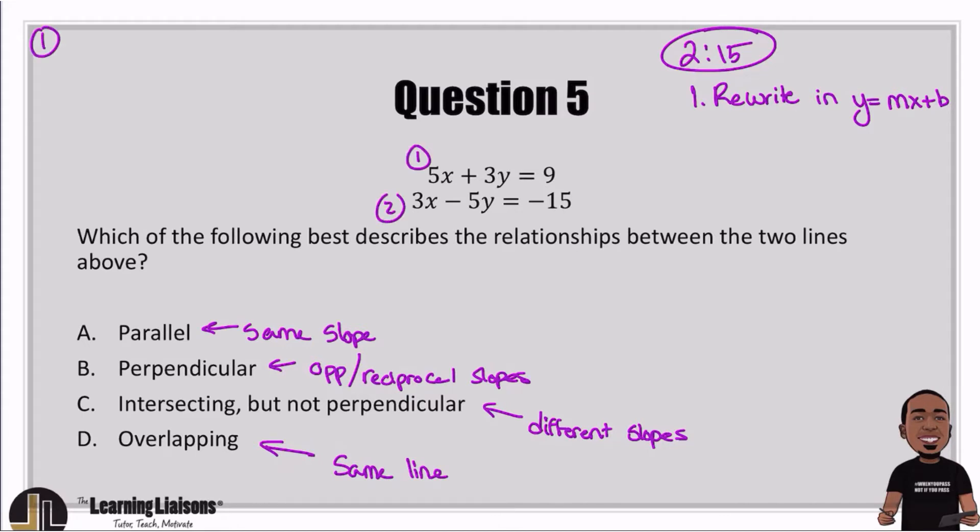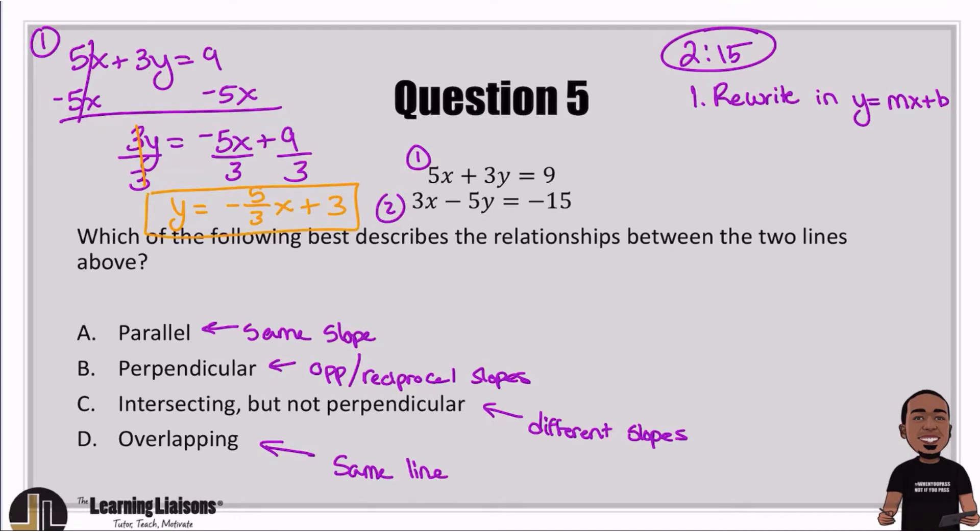So the first one, 5x plus 3y equals 9. What we're going to do from here is move the x over by subtracting 5x from both sides. So, gone there. 3y equals negative 5x plus 9. From there, we're going to divide both sides by 3, or all sides by 3. And then that's going to give us y equals negative 5 over 3x plus 3. So there is the first line.